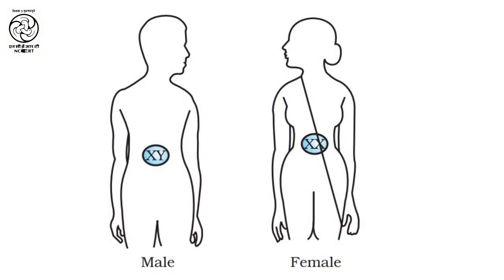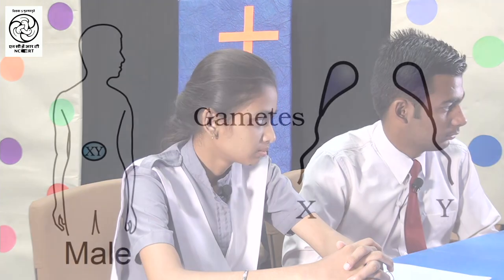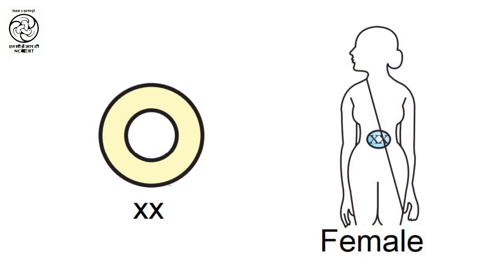To understand this, let us have a look at the computer screen. Males have one X and one Y chromosome, whereas females have two X chromosomes. Now what happens during reproduction? After meiosis, males produce two types of gametes — half of the gametes contain the X chromosome whereas the other half contain the Y chromosome. Females produce only one type of gamete, which always contains the X chromosome.